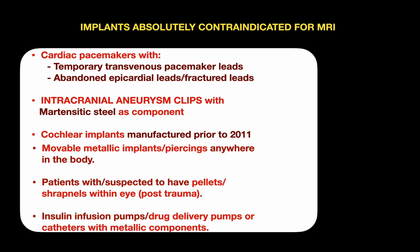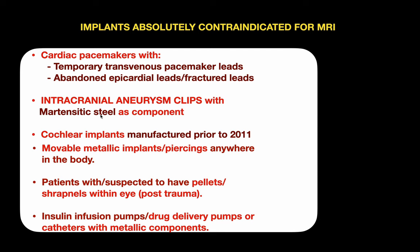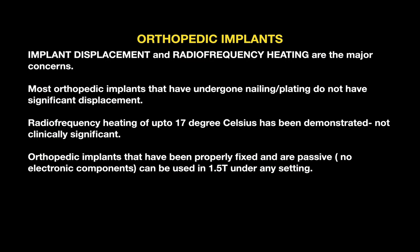Absolutely contraindicated implants for MRI include: cardiac pacemakers with temporary transvenous pacemaker leads, abandoned pericardial leads, or fractured leads; intracranial aneurysmal clips made of martensitic steel; cochlear implants manufactured prior to 2011; movable metallic implants or piercings anywhere in the body; patients suspected to have pellets or sharp metallic objects within the eye; insulin infusion pumps; drug delivery pumps; and catheters with metallic components.